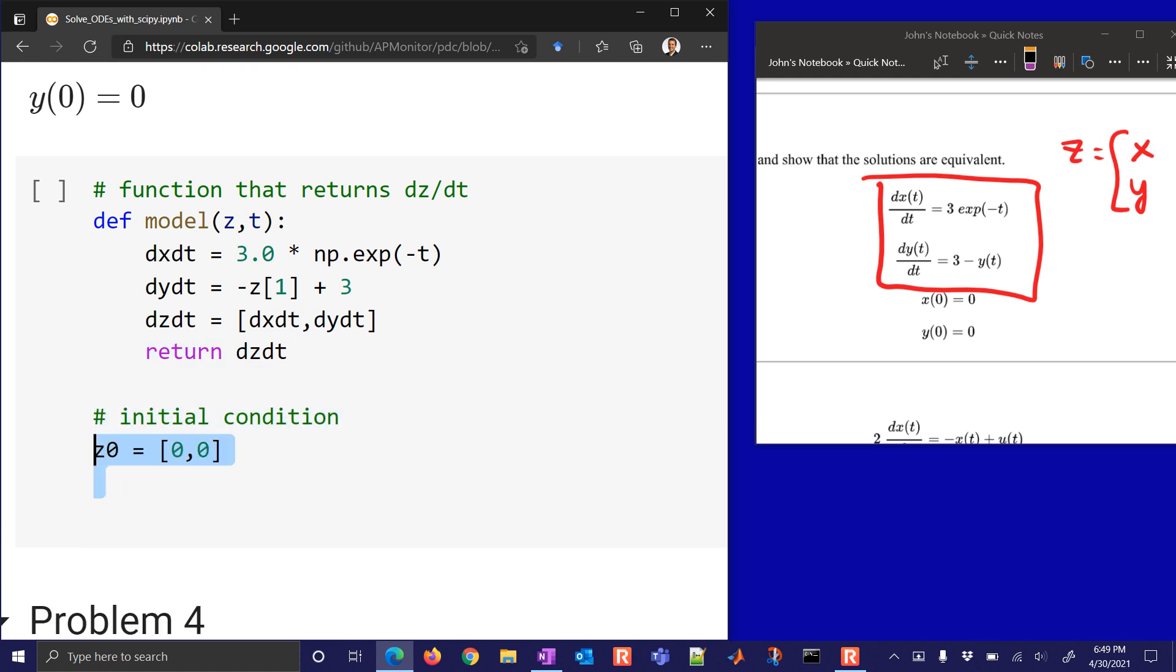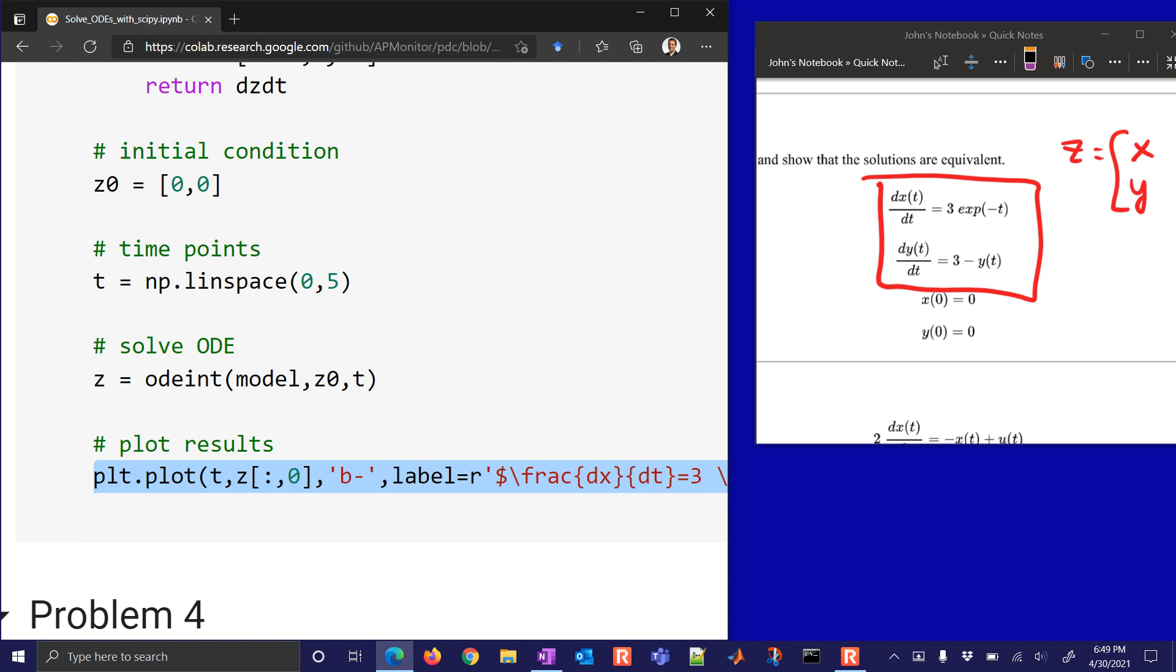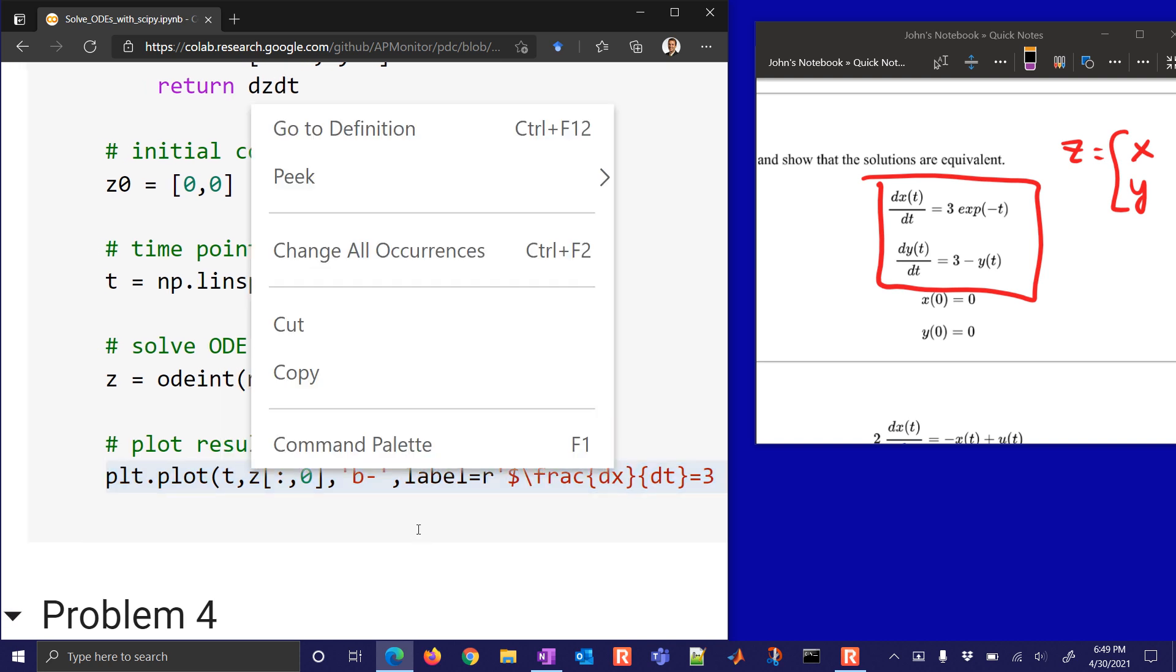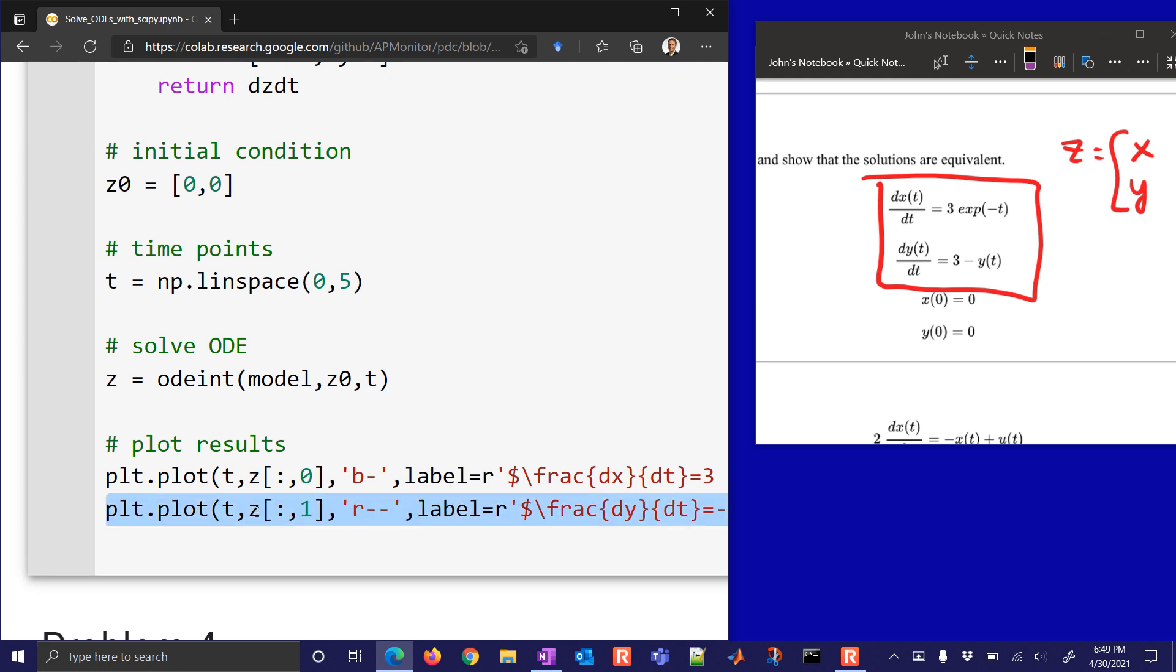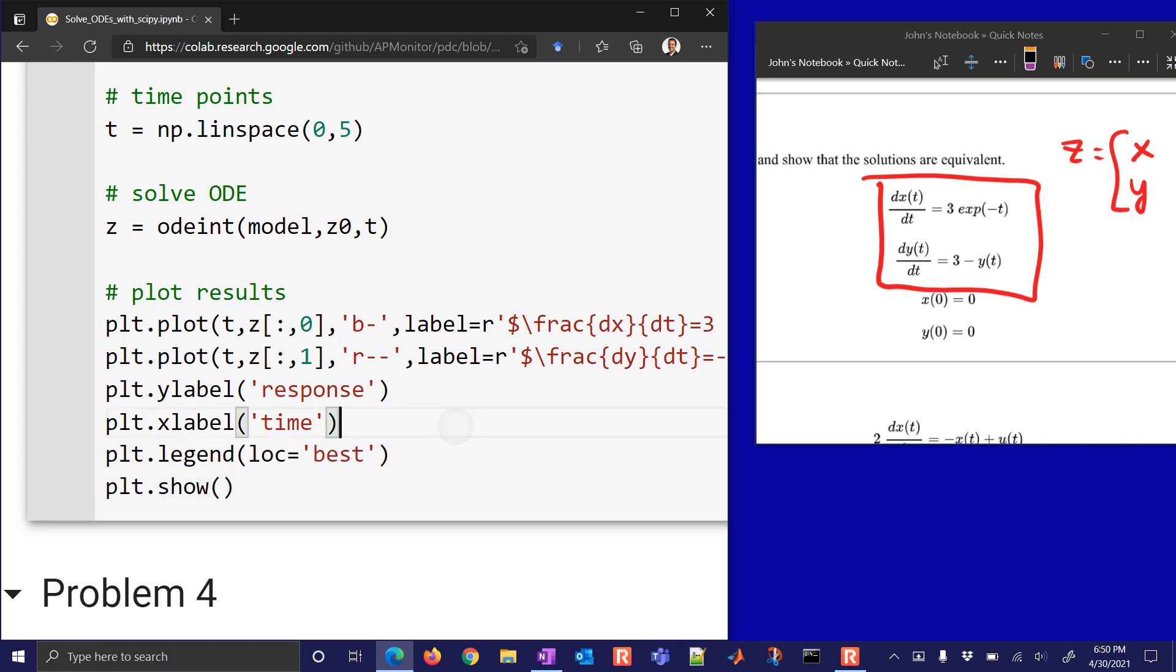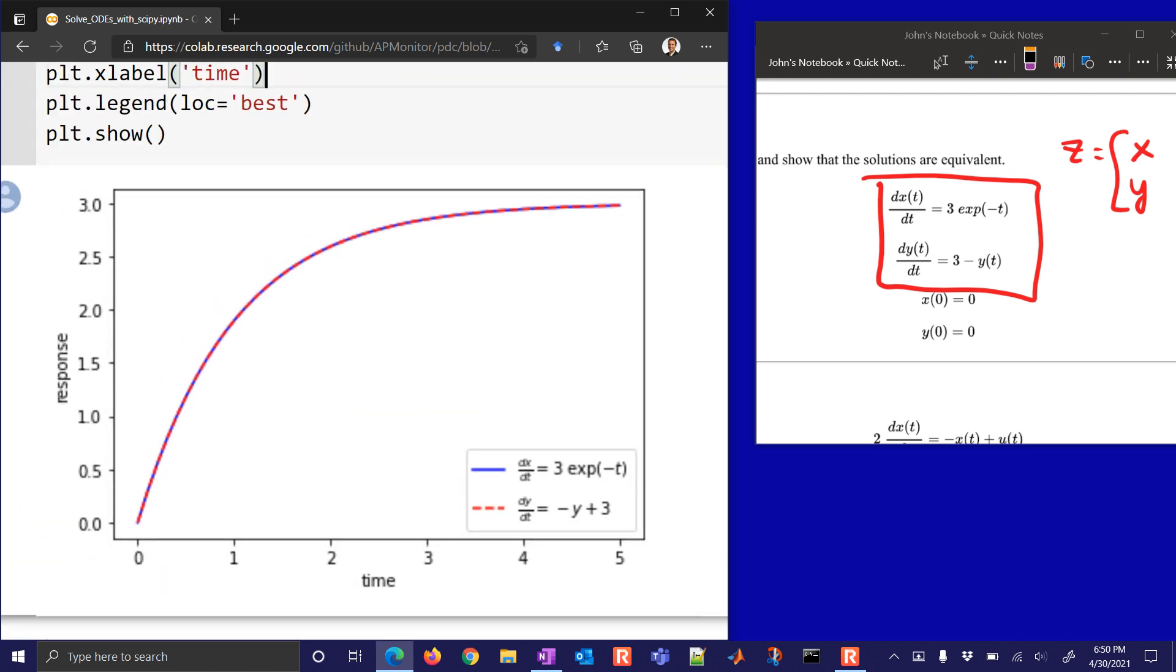I have my initial condition. In this case, I need two values because I have these two states that I'm calculating. And then I'll have some time points between 0 and 5. And then I'll solve the ODE just as I would before. But now I need to break out the z values because I have two values in z. And the way to do that is right here with the z. The first column, that's going to be my x. And then the second column is going to be my y. I'll put in some things just to make the plot a little bit clearer to see in terms of the results. And there you can see the results between the two. And those are equivalent, as you can see.